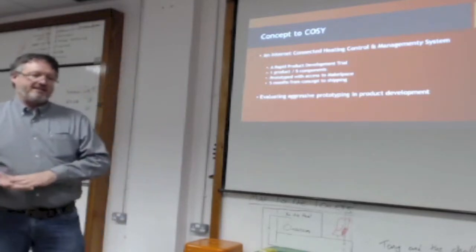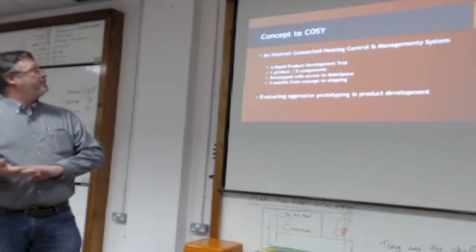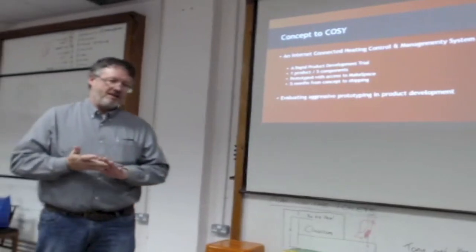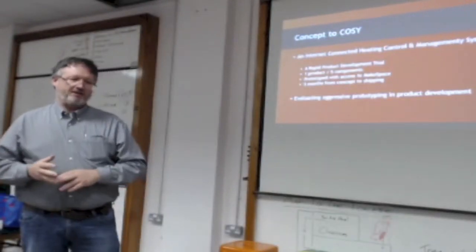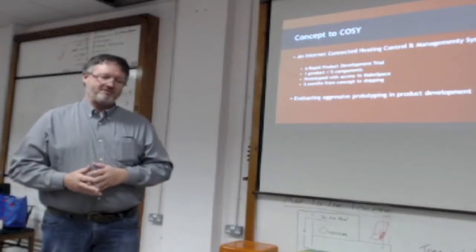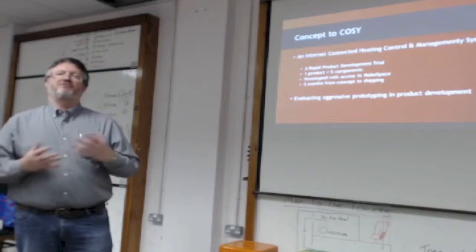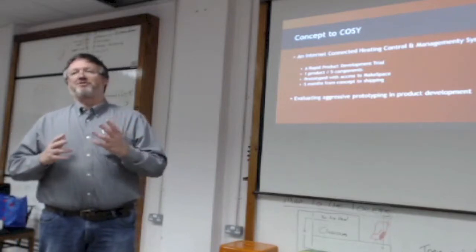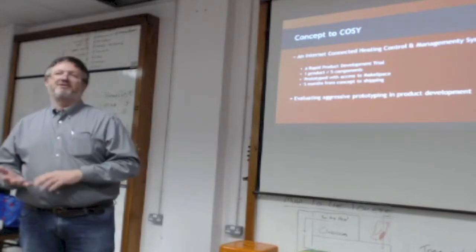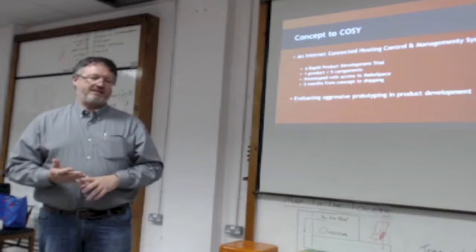So what is COSY? It's an internet-connected heating control management system. It's a product with at the moment five components and the number of components grow all the time. All the prototyping was done with access to MakeSpace, mostly done by me, but I had some friends and colleagues help me on occasion. And the important thing is where products of this type typically take between 12 and sometimes as long as 24 months to develop, we went from concept to delivering first product in five months. And we did that through a couple of techniques that I'll talk through.